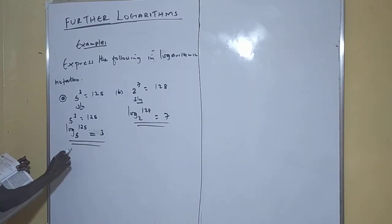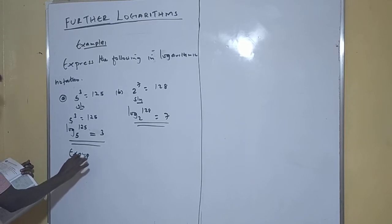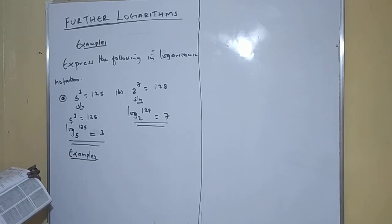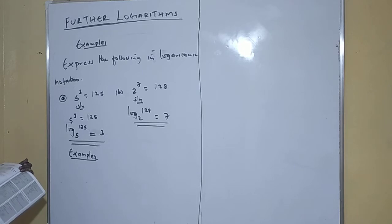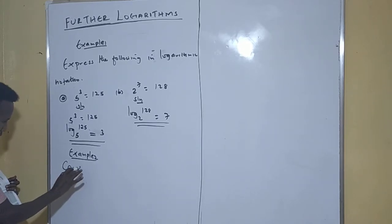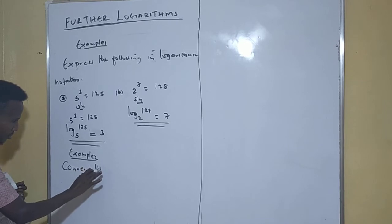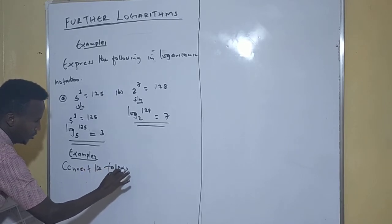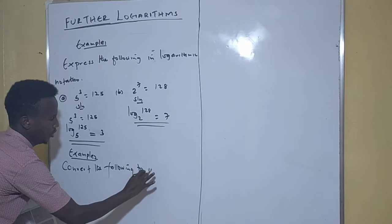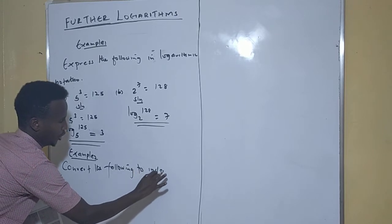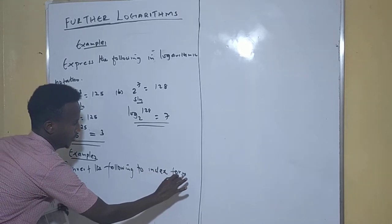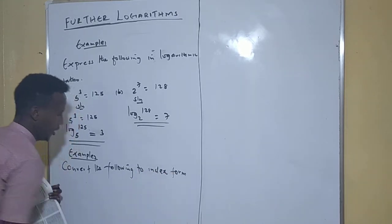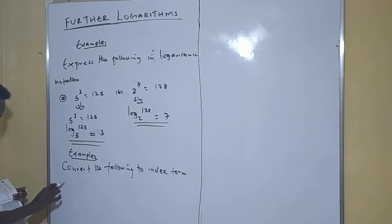Let's see the opposite of this one — Example 2. You are told to convert the following to index form. They will give you the expression in logarithm form.